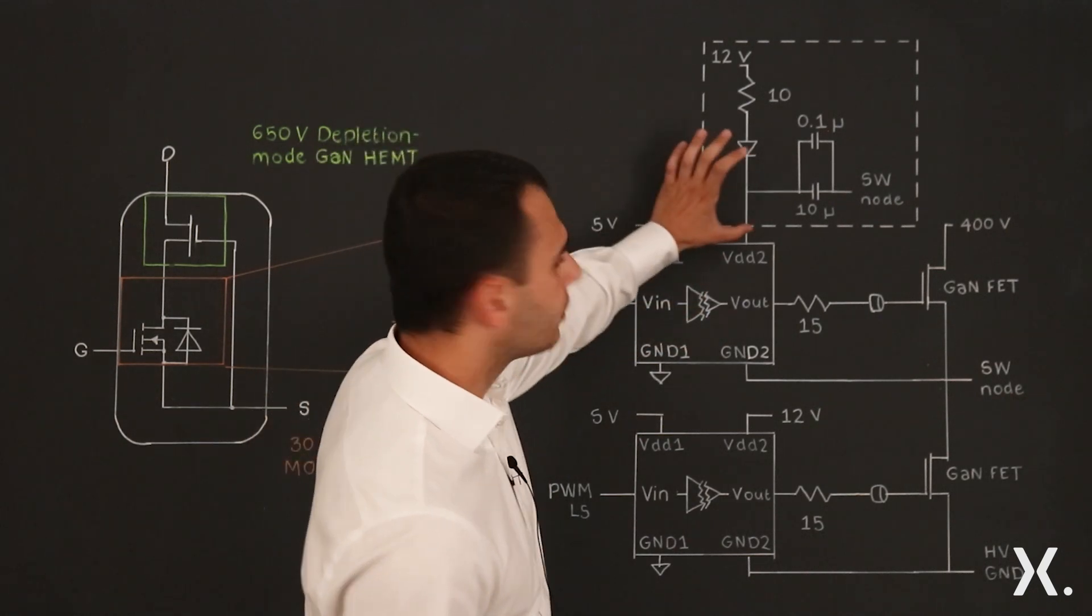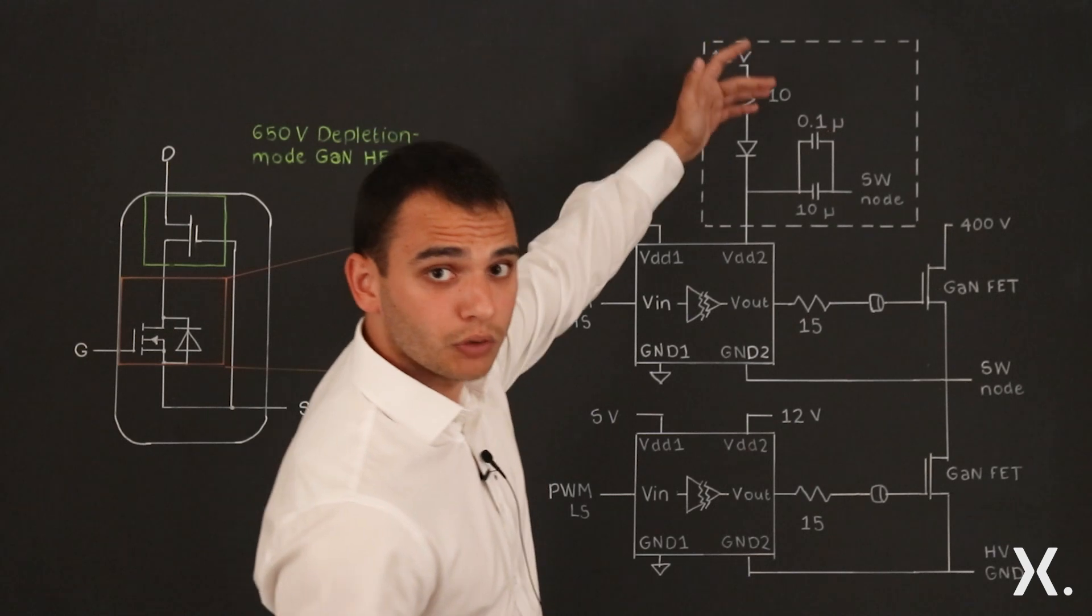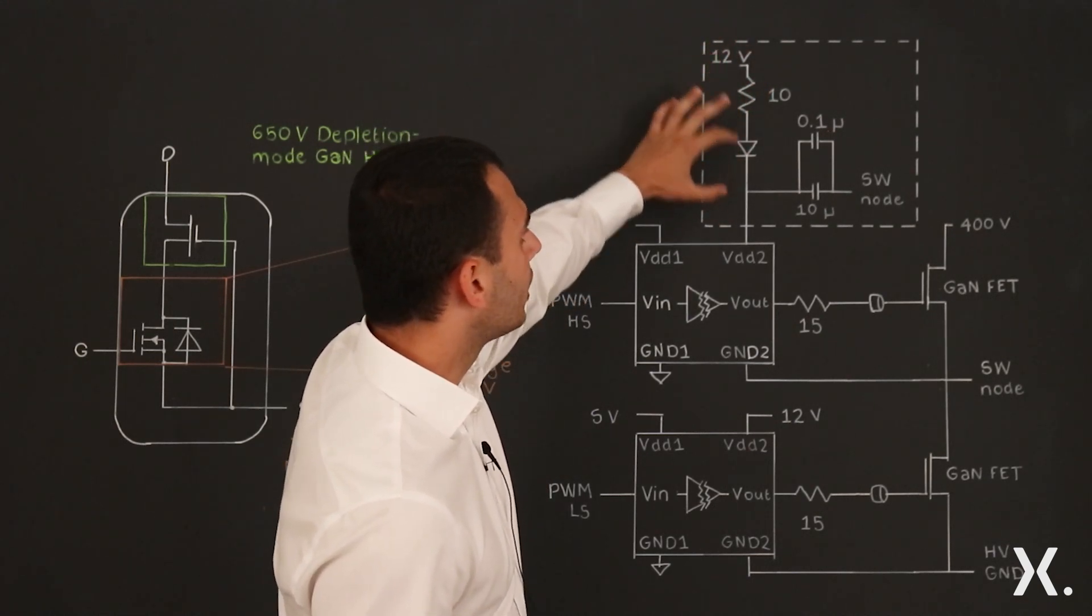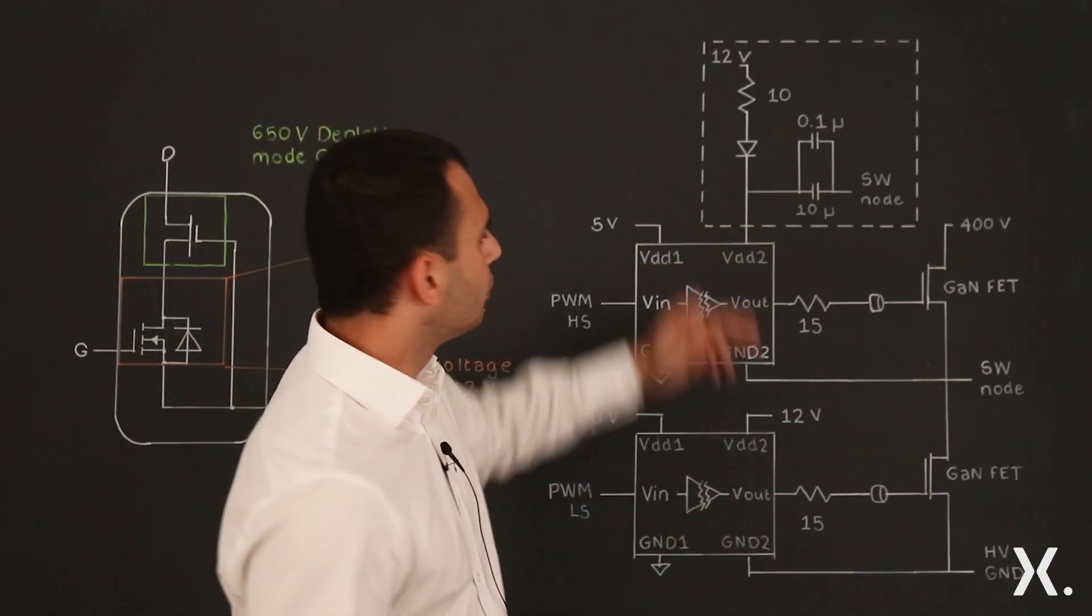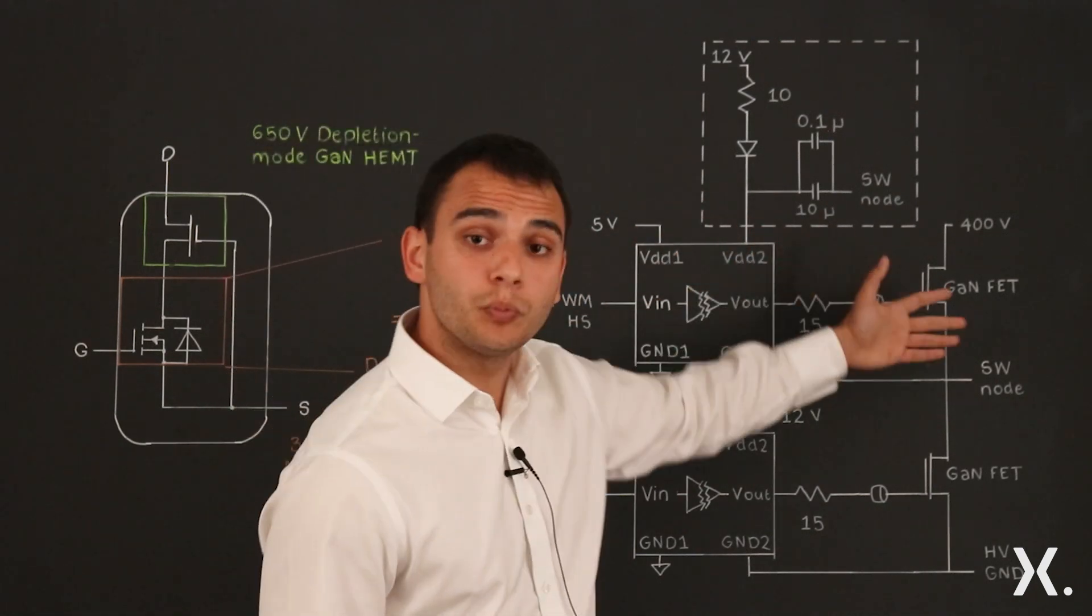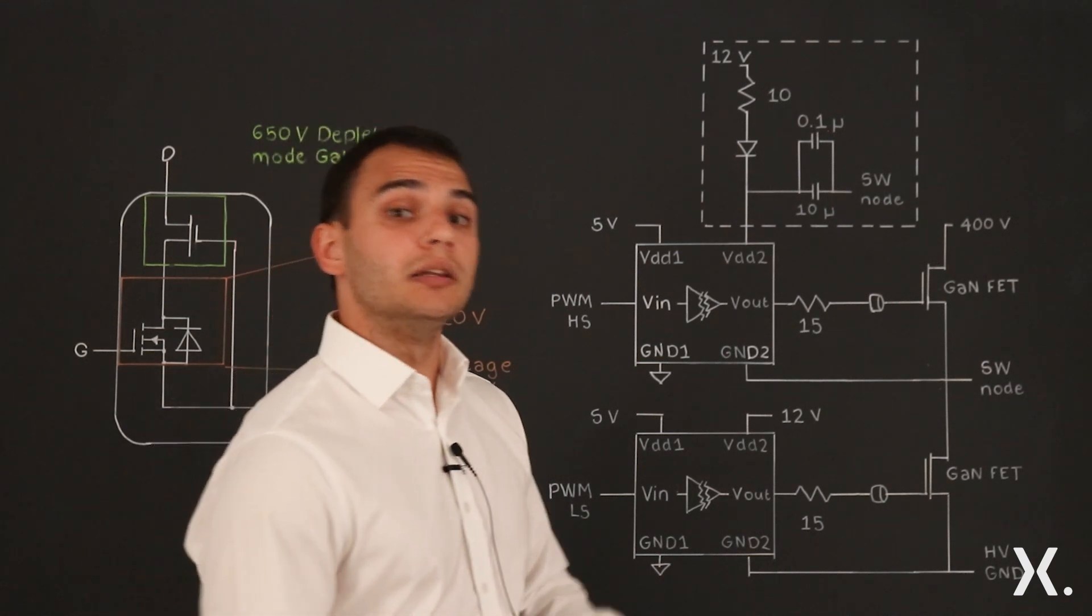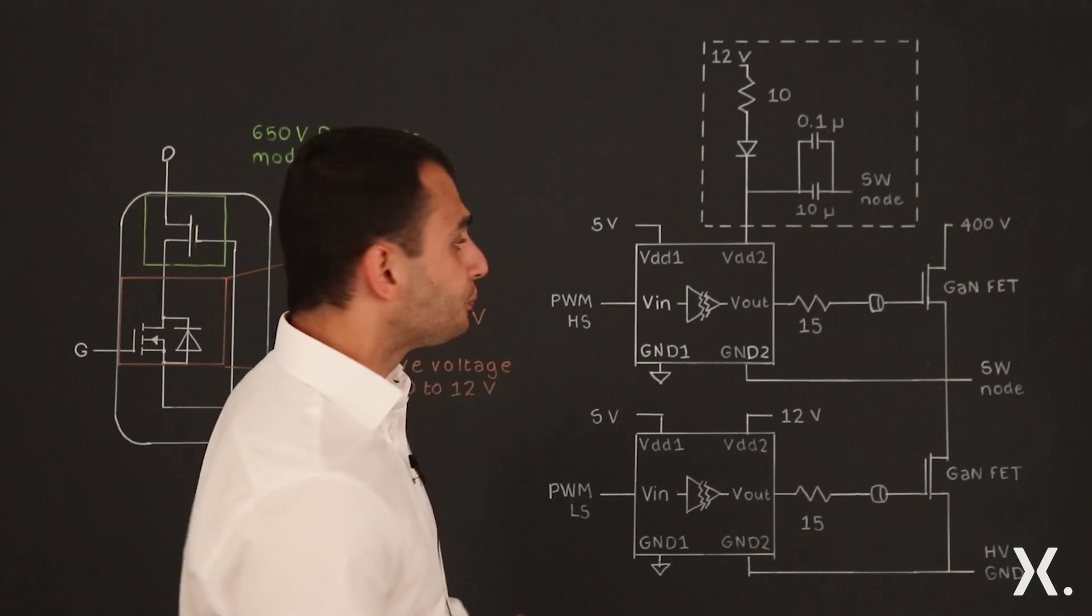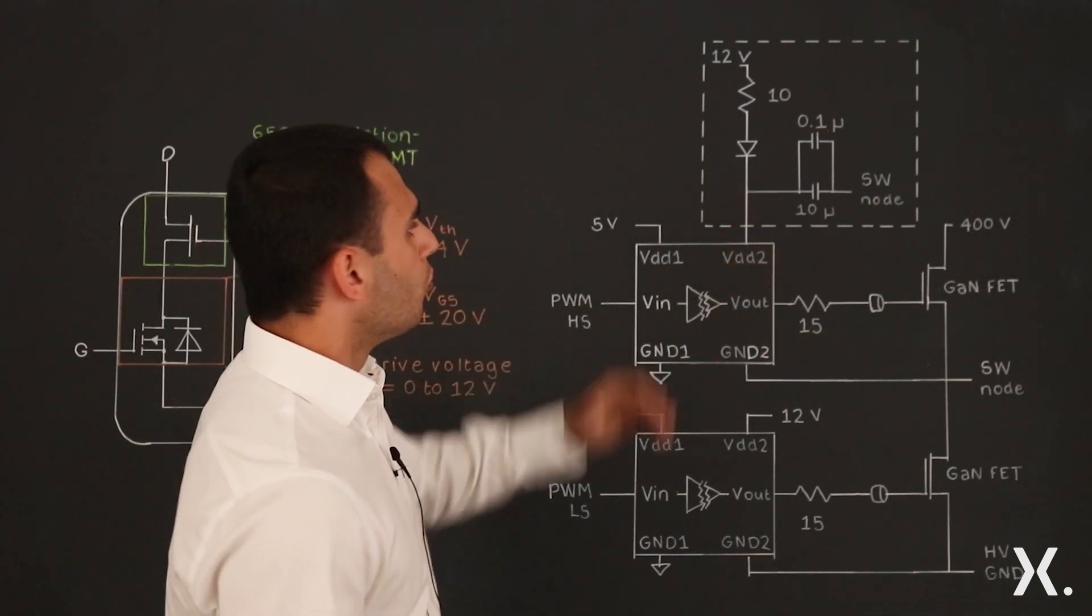So essentially, if you have any variation on the bootstrap circuit, for example we have 10 or 12 volts here and then you have the voltage drop across this diode, it doesn't matter for the device if the voltage here is at 8 volts, 9 volts, or 10 volts. The device will still be able to switch and turn on reliably and to be fully turned on with the highest current possible, even with different voltages.